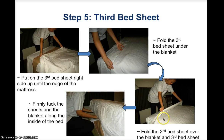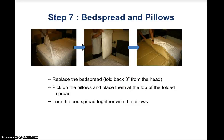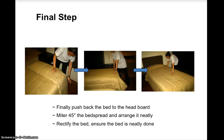Fold the second bedsheet over the blanket and the third bedsheet, and firmly tuck all sheets and the blanket along the inside of both sides of the bed. Move to the foot of the bed and straighten the mattress pad, first, second, and third bedsheets, and blanket by pulling each one by one. Tuck the blanket and bedsheets at the back, mitre 45 degrees at both corners, and tuck in both sides. Pick the pillows, place them at the top of the folded spread, turn the bedsheet together with the pillows, and finally push the bed back to the headboard. Rectify and ensure the bed is neatly done.